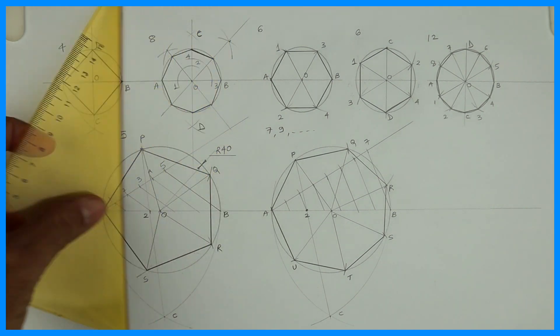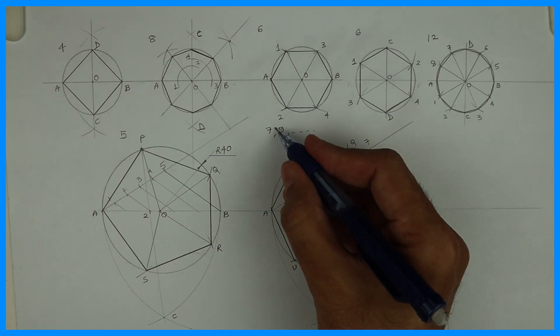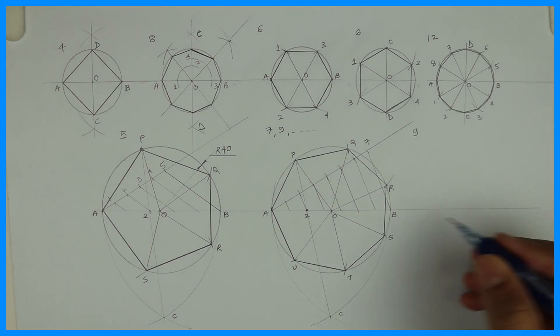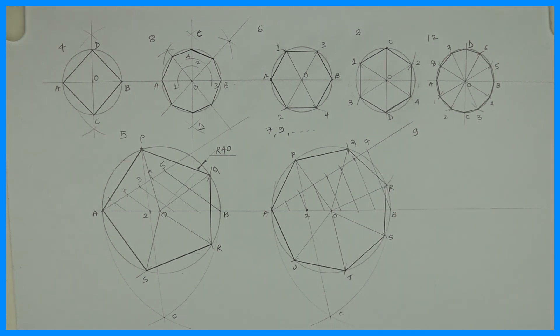Now same way, if you want nanagon, a 9-sided figure, then you divide line AB into 9 parts. That way you can keep on doing this for any polygon. Thank you.